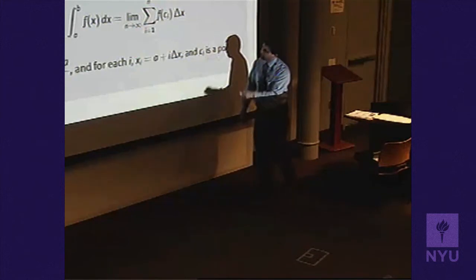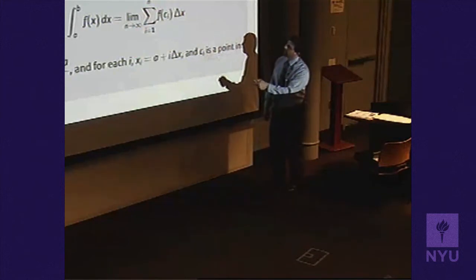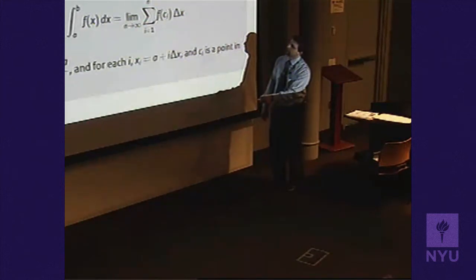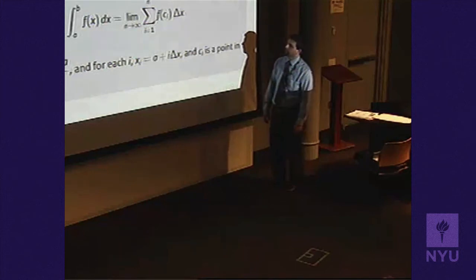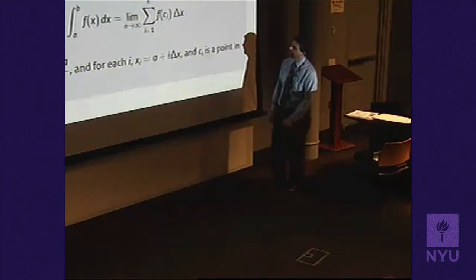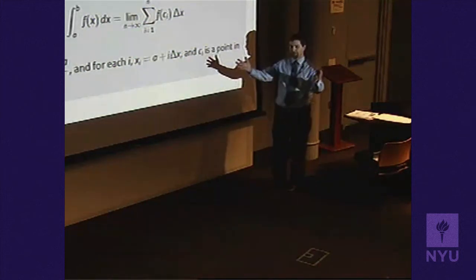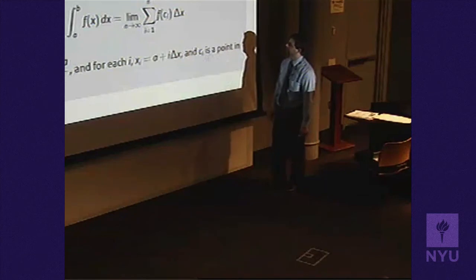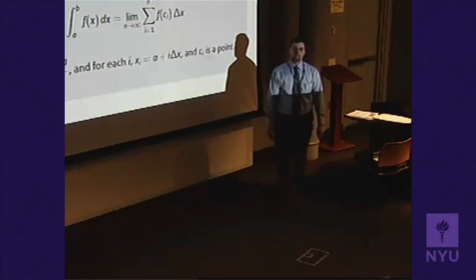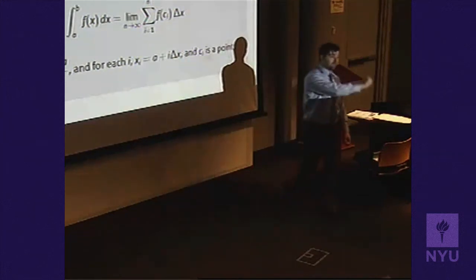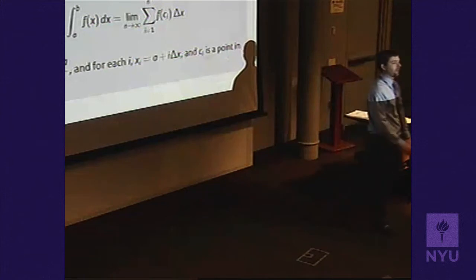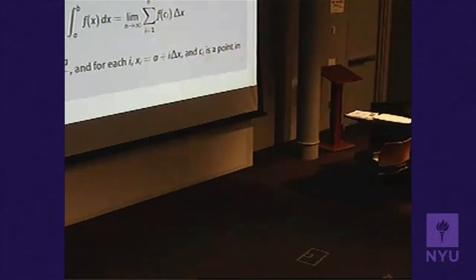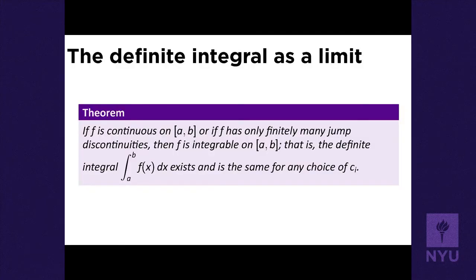Delta x is the width of the interval divided by the number of divisions. You mark off n equally spaced points between a and b, then pick some point in each interval to plug into the function to make your rectangle heights.